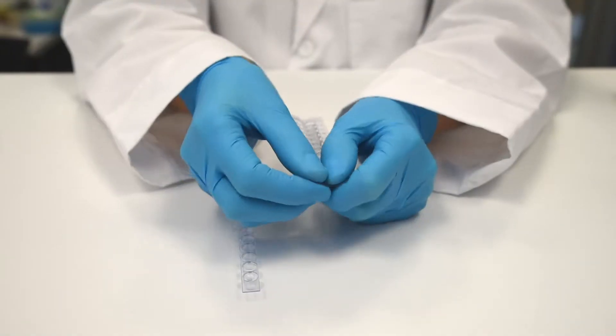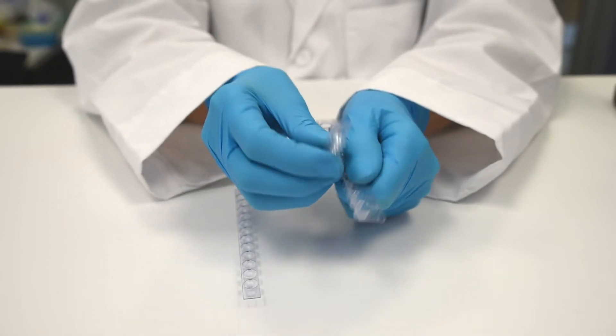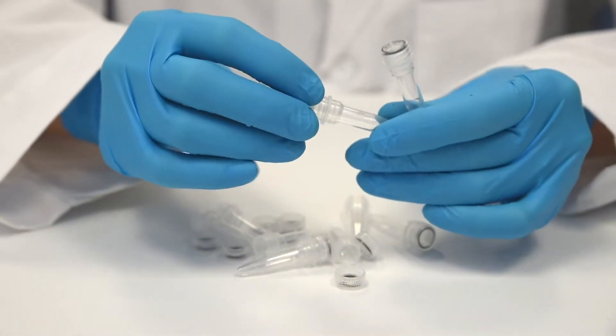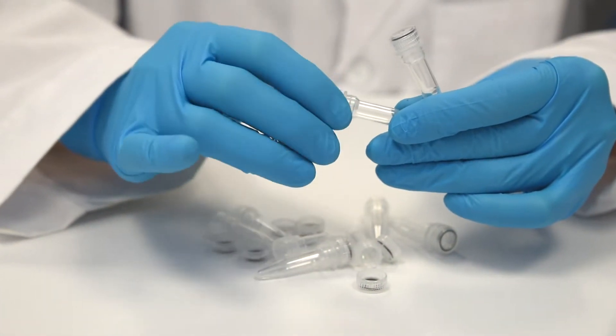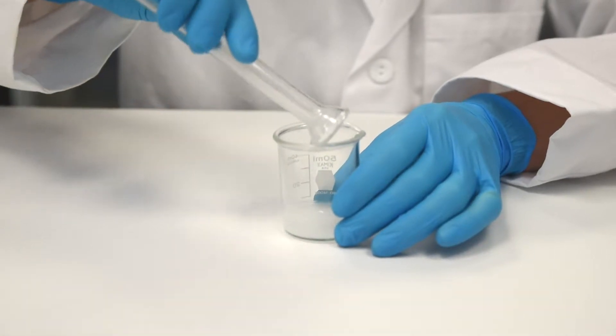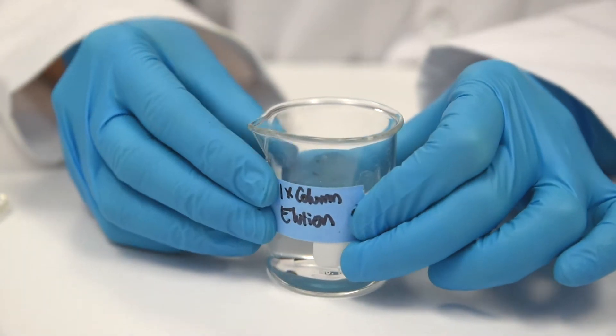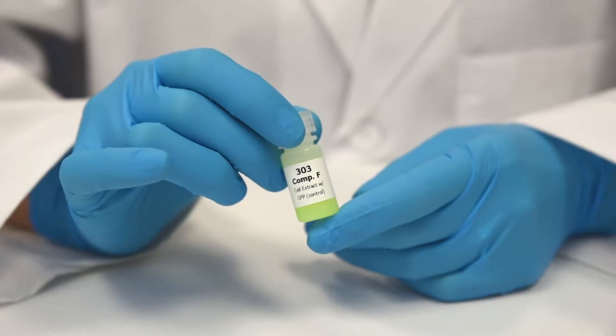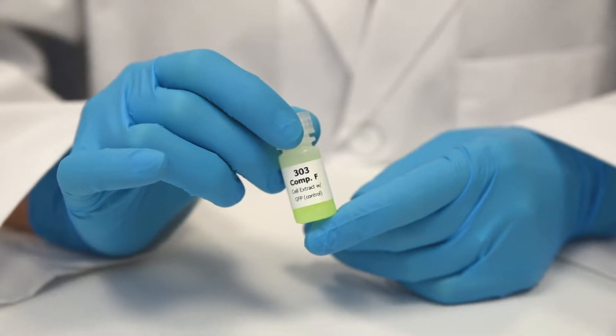A chromatography column, microtiter strip for sample collection, two screw top microcentrifuge tubes, rehydrated Molecular Sieve Matrix, 1X Column Illusion Buffer, and finally, Control GFP Extract if needed.